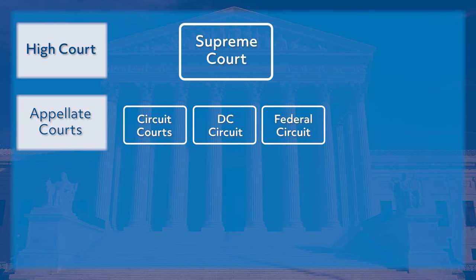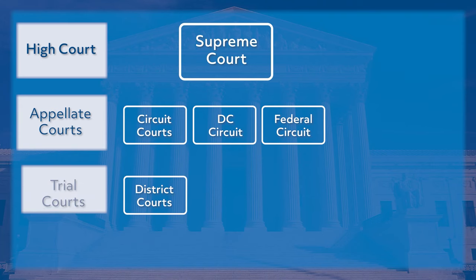Below the circuit courts are the District Courts. These are the trial courts that have original jurisdiction over cases. Trial by jury is done only in these courts. If a case is appealed, no juries are used in the higher courts. Judges in these lower courts are also appointed for life by the president with the consent of the Senate.